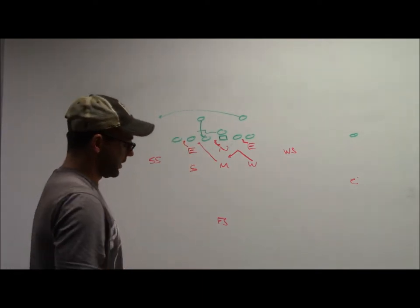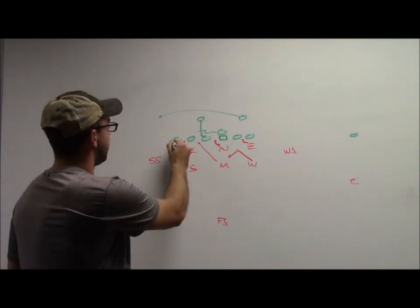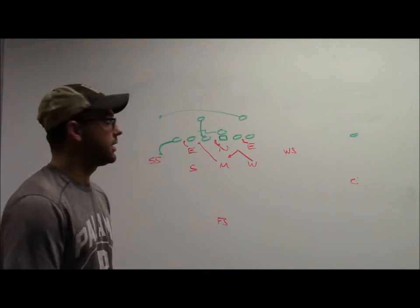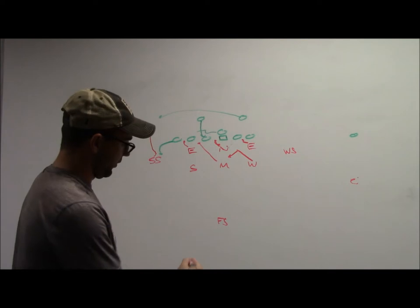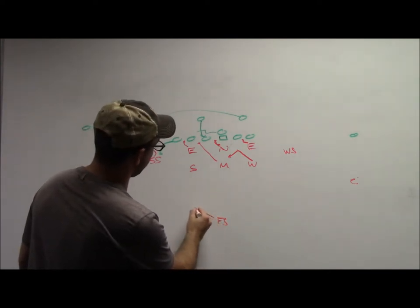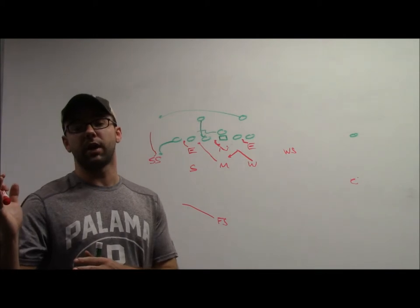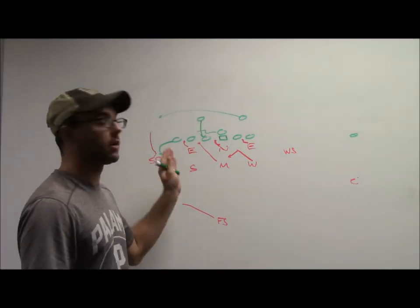This tight end, in this case, we'll say the tight end arc releases and he's going to block the strong safety. Strong safety has to maintain outside leverage on this, keep his outside arm free, and he's ultimately responsible for the pitch. The free safety is going to be responsible for checking this guy to make sure he's not releasing vertically on a play action pass. If he does, he's the free safety's responsibility. If he doesn't, the free safety can run the alley.